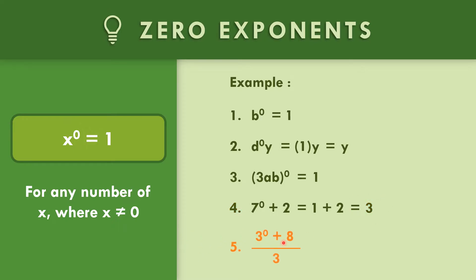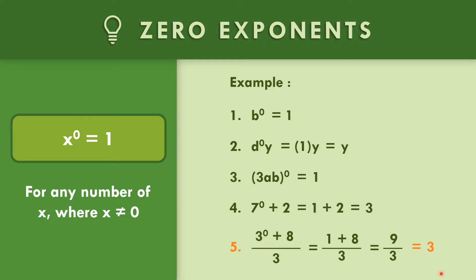How about number five? Three to the zero plus eight over three. Three to the zero, based on the rule of the zero exponent, equals one. So one plus eight is nine, divided by three. Nine divided by three equals three.